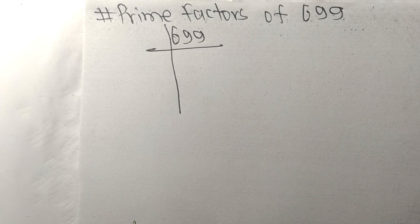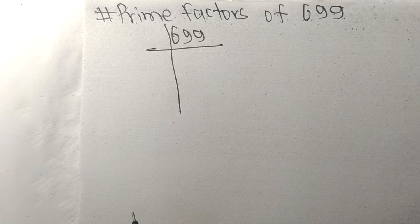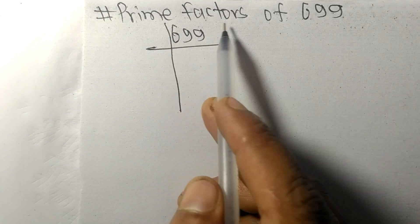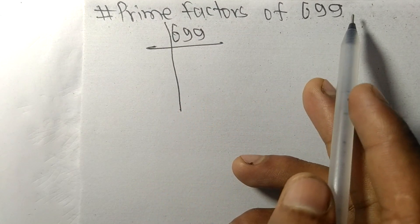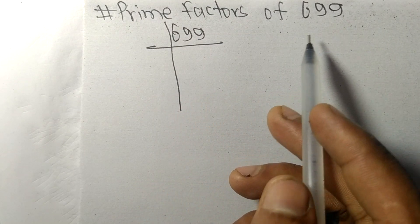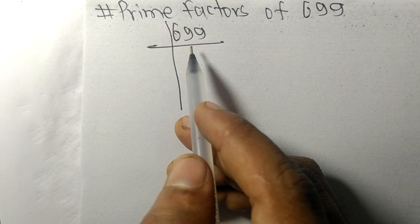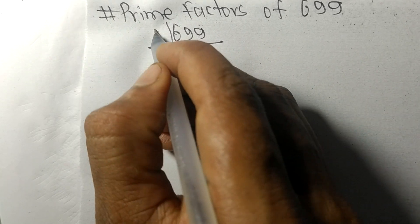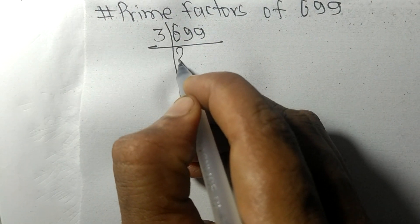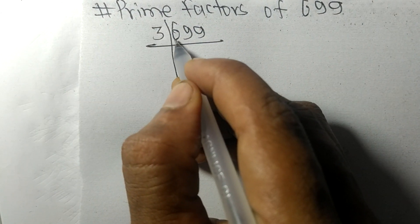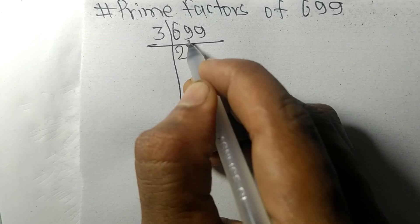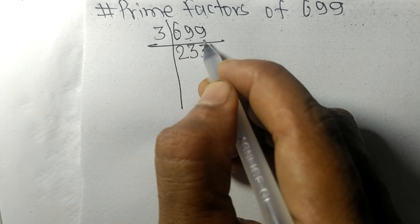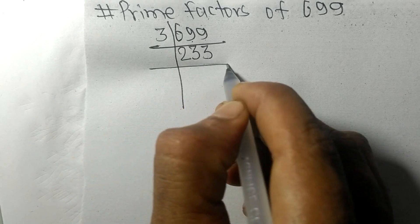Today in this video we shall learn to find the prime factors of 699. 699 is exactly divisible by 3: 3 times 2 is 6, 3 times 3 is 9, and 3 times 3 is 9.